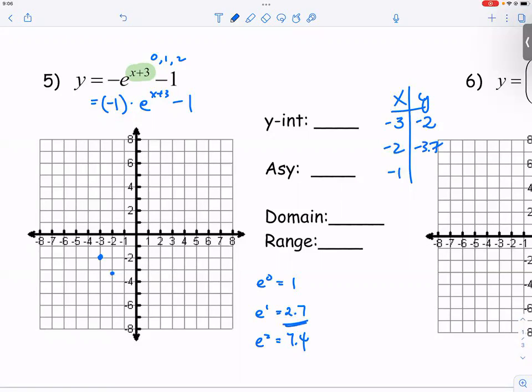E square is 7.4. And then you have a negative in the front. So negative 7.4 minus 1 would give you negative 8.4.